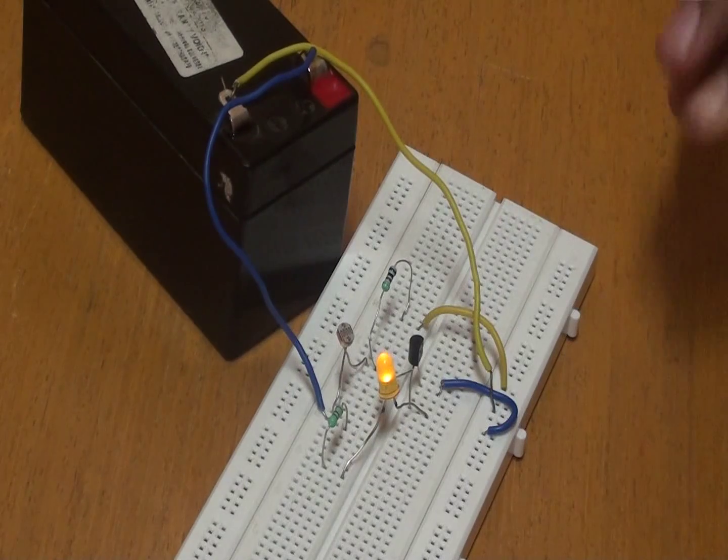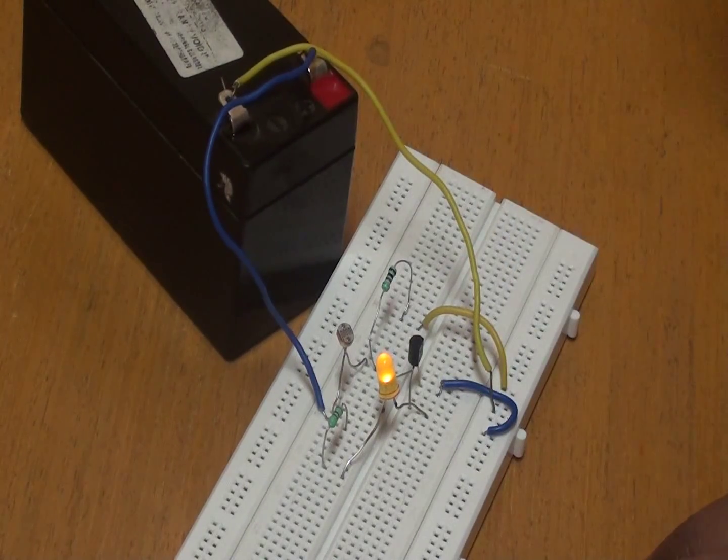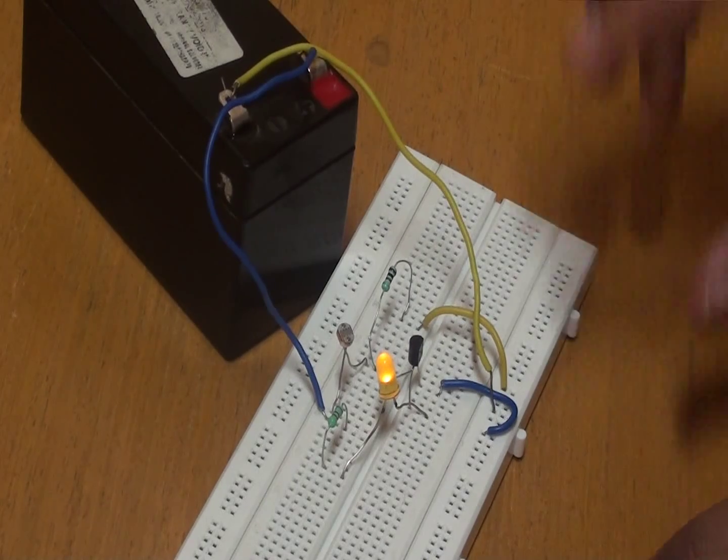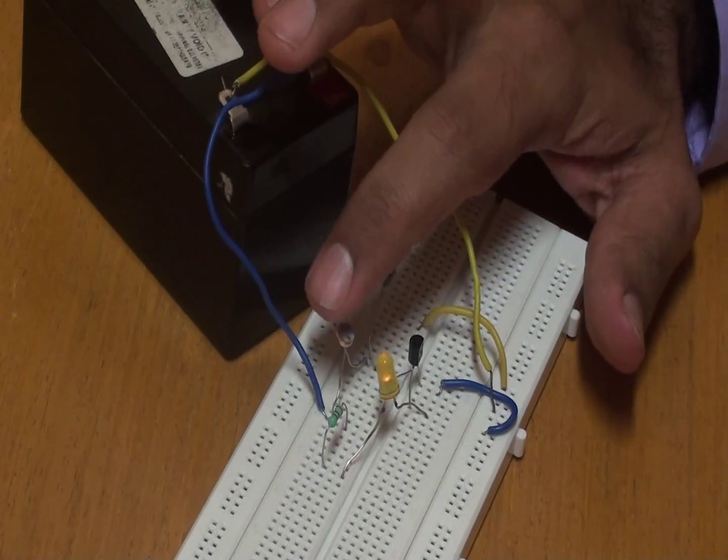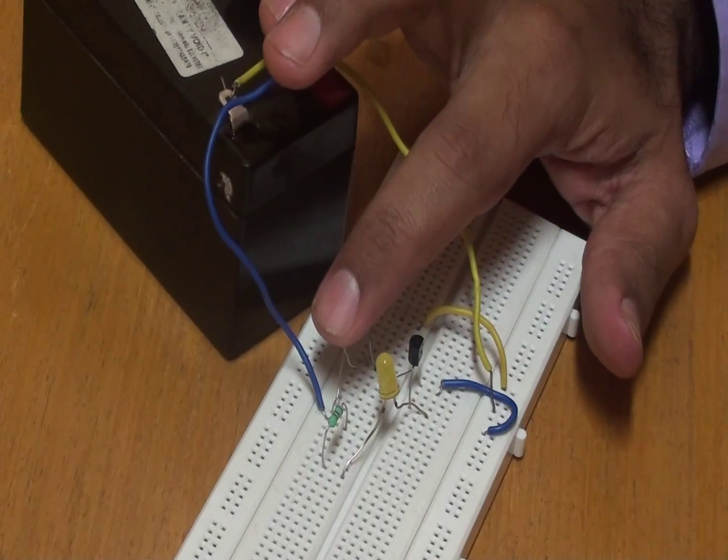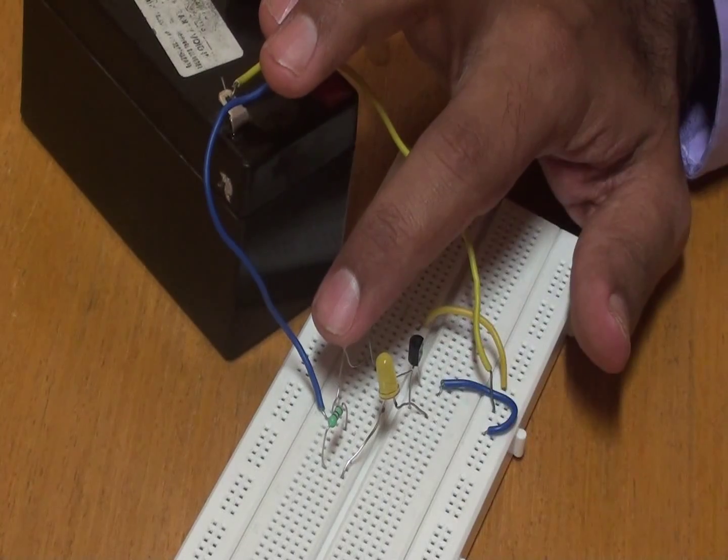So a photo resistor passes the current to flow when there is a light supply or there is brightness. So as we see, you can see here brightness here. And it allows the flow. So if I block the flow of light falling on this photo resistor, this light is wrong.